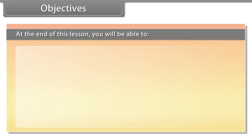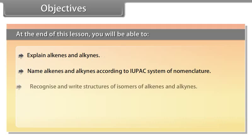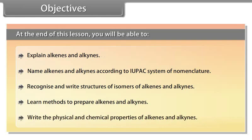Objectives. At the end of this lesson, you will be able to explain alkenes and alkynes, name alkenes and alkynes according to the IUPAC system of nomenclature, recognize and write structures of isomers of alkenes and alkynes, learn methods to prepare alkenes and alkynes, and write the physical and chemical properties of alkenes and alkynes.